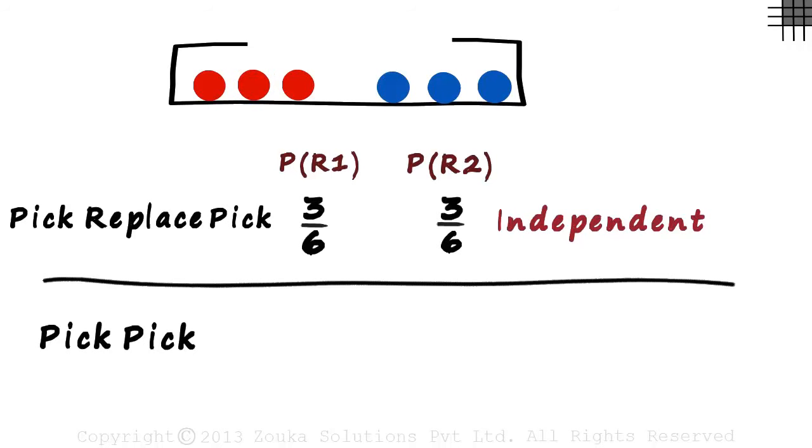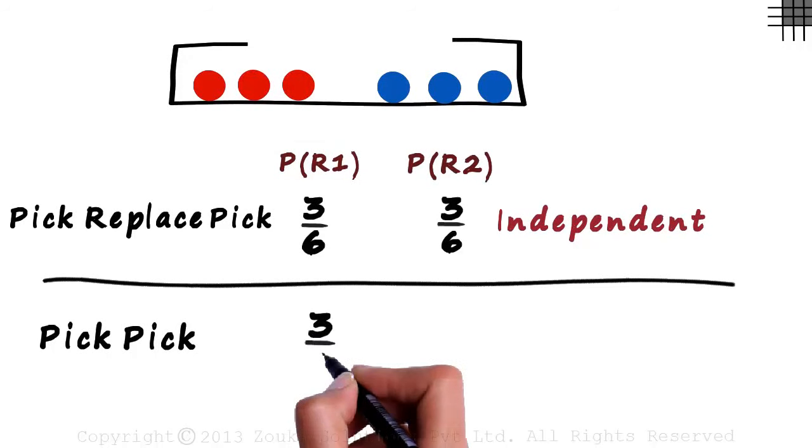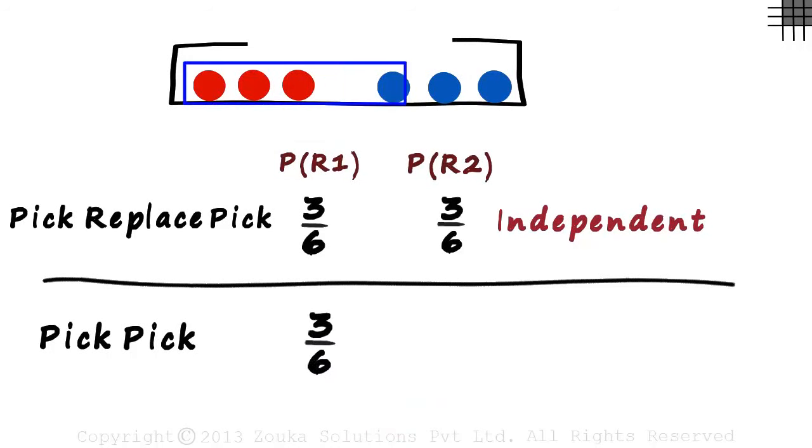Now let's find the probability of picking a red marble in your first chance. It will be three by six. You can pick a red marble in three ways out of the six possible marbles. So assume the red marble is taken out. But remember, this time it's not put back in the box. It remains outside.